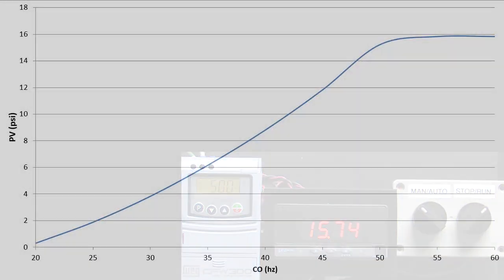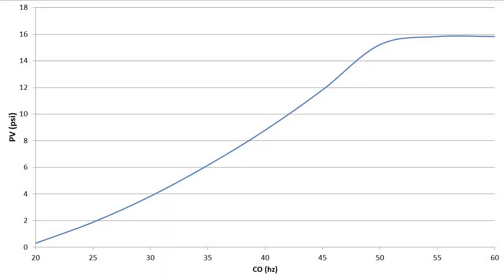If we plot that, it looks like this. So, it looks like with one valve open, we only need to run the motor at a little under 35 Hz to get the 6 psi we want.